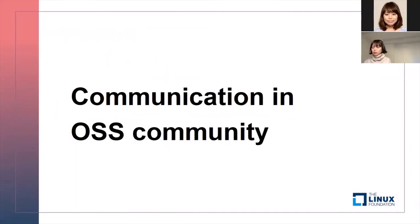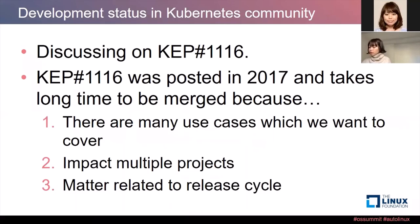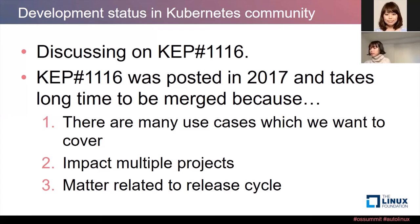Next, I will talk about communication in open source community. As I said, we are discussing KEP number 1116. This KEP was posted in 2017, so we have been discussing this issue for over four years. The reason why merging this KEP has taken so long — I believe — comes down to three reasons: there are so many use cases to cover, this KEP impacts multiple projects, and there are matters related to the release cycle. I will talk about these reasons in detail in the next slides.